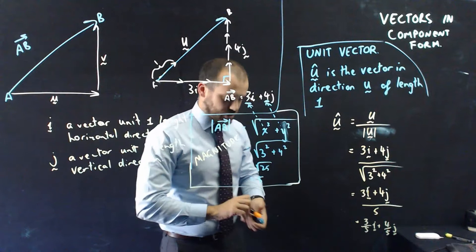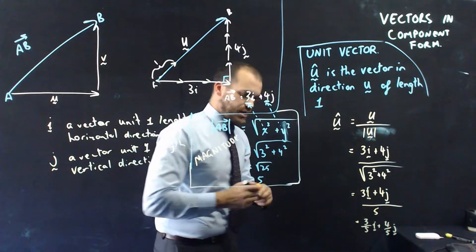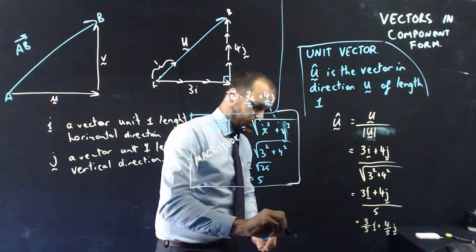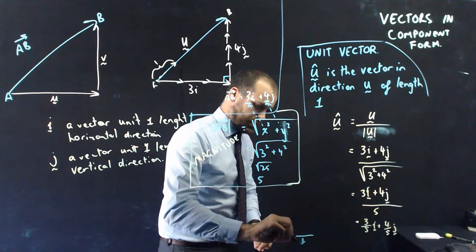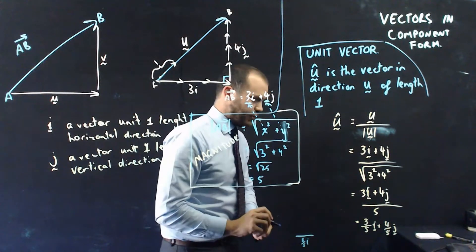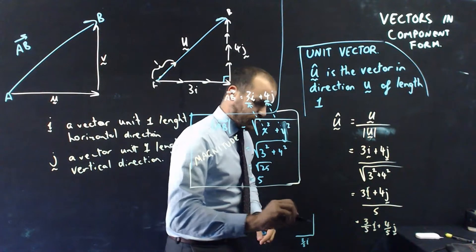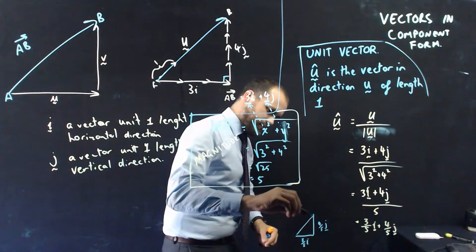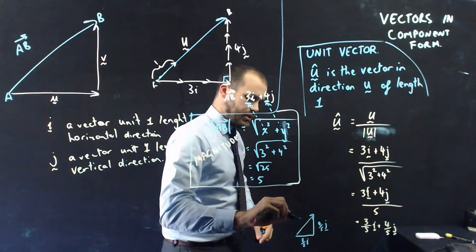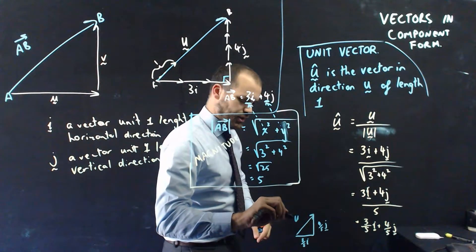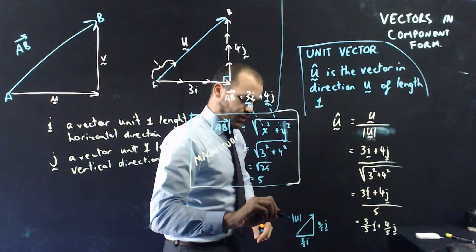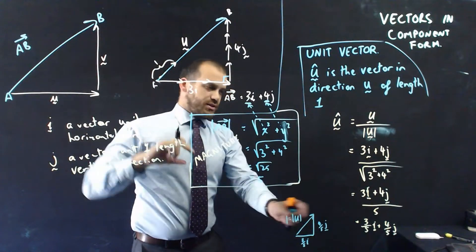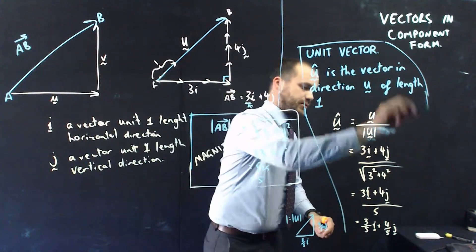And not to labor the point too much, but what that means is that if I create a vector by going 3 fifths of an i vector across, so that's got length 3 fifths. That's 3 fifths of i. And then I go 4 fifths of j up. What I will have created is a vector of length 1. So I can say that that's vector u, and it's going to be equal to 1. The magnitude of it's going to be equal to 1. And I've just created that vector there. That's what our unit vector is.